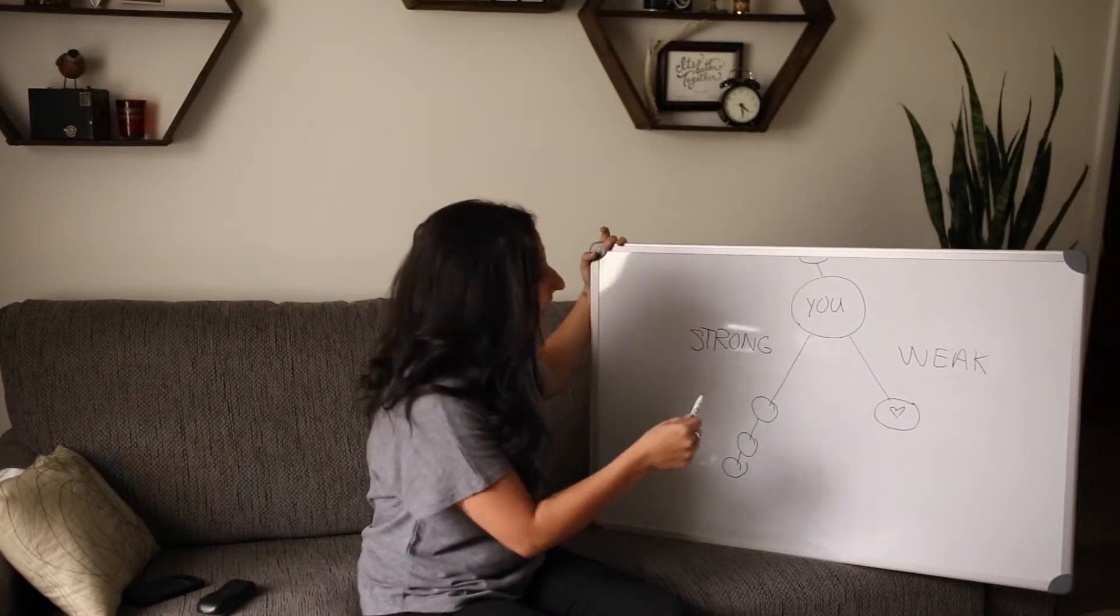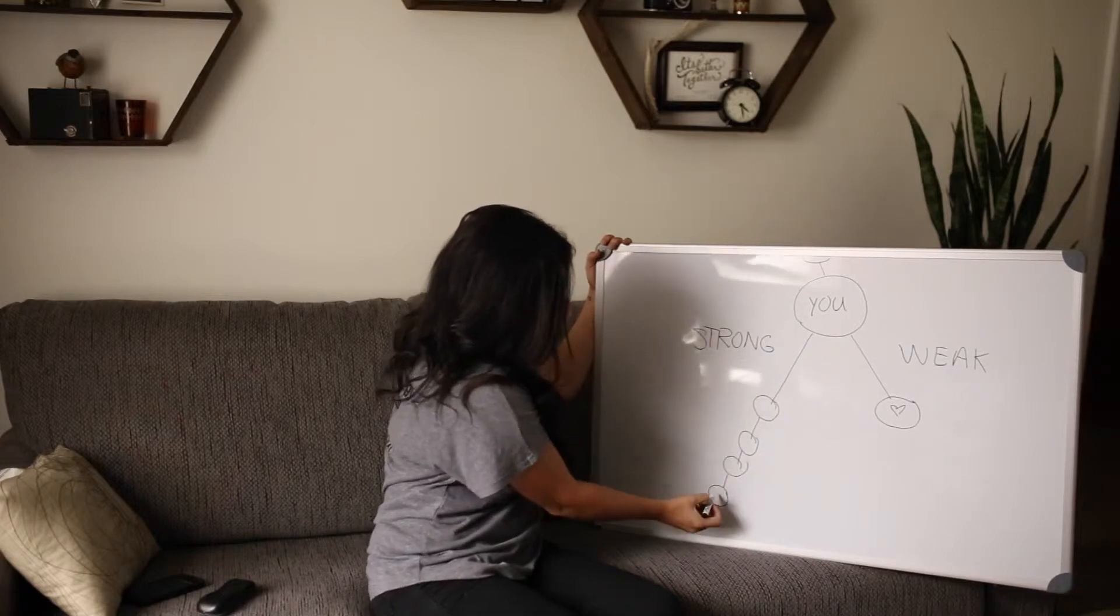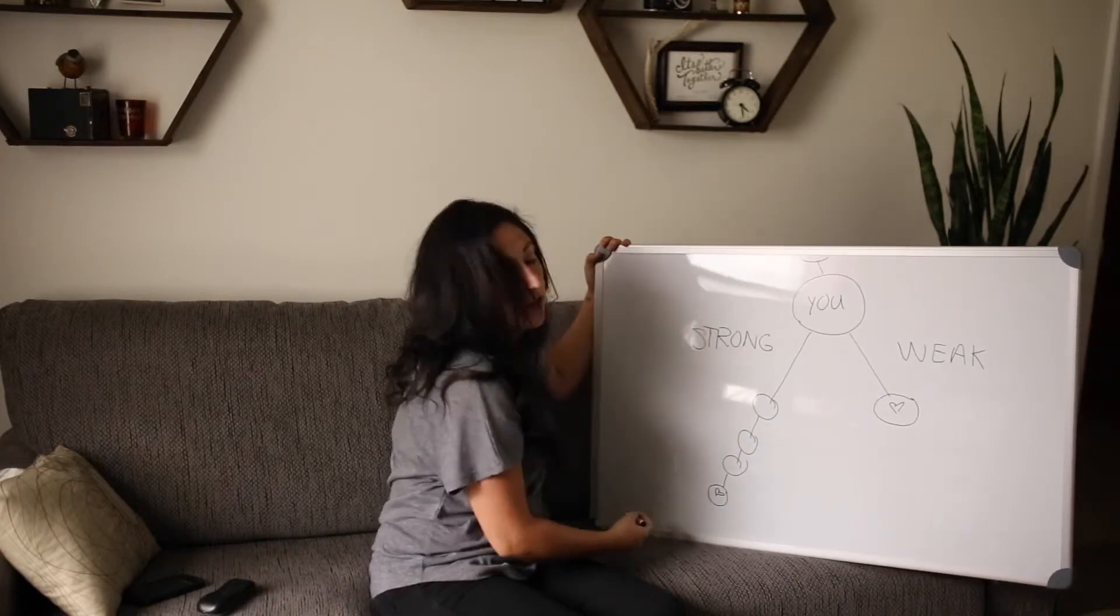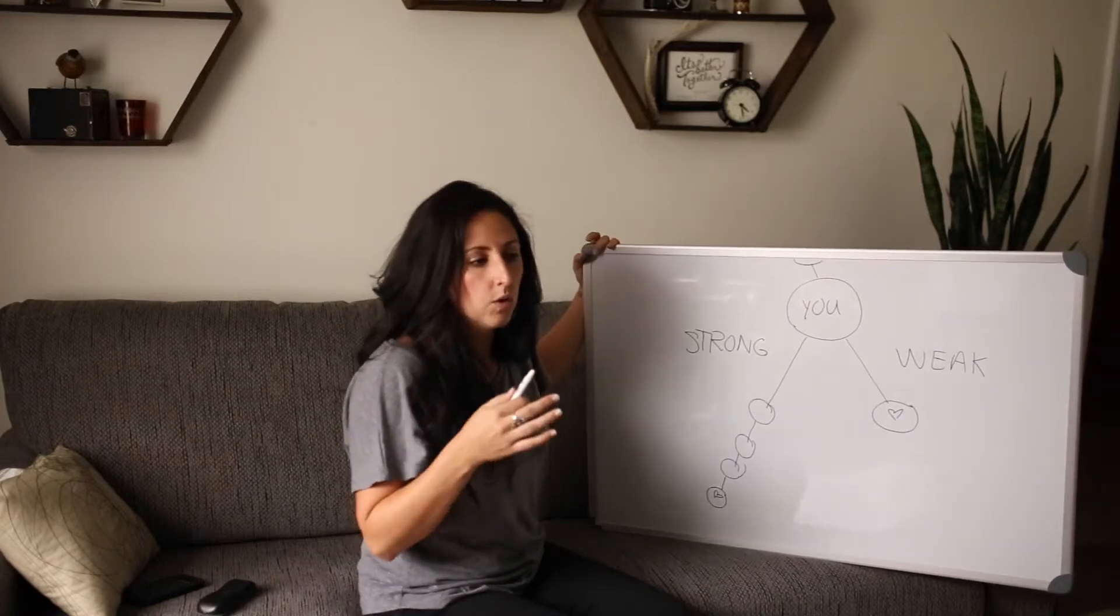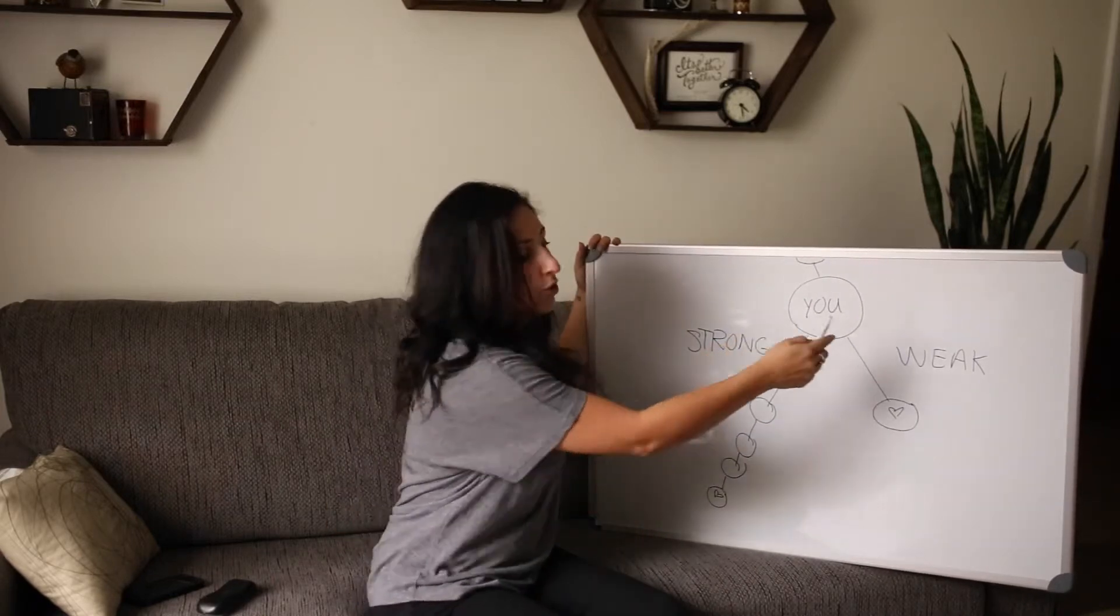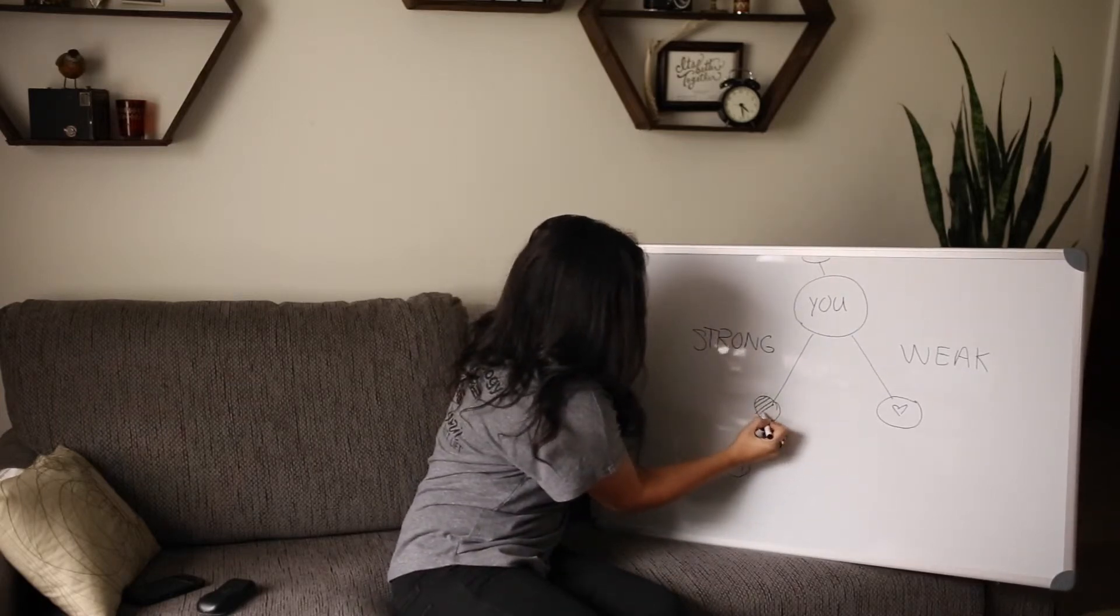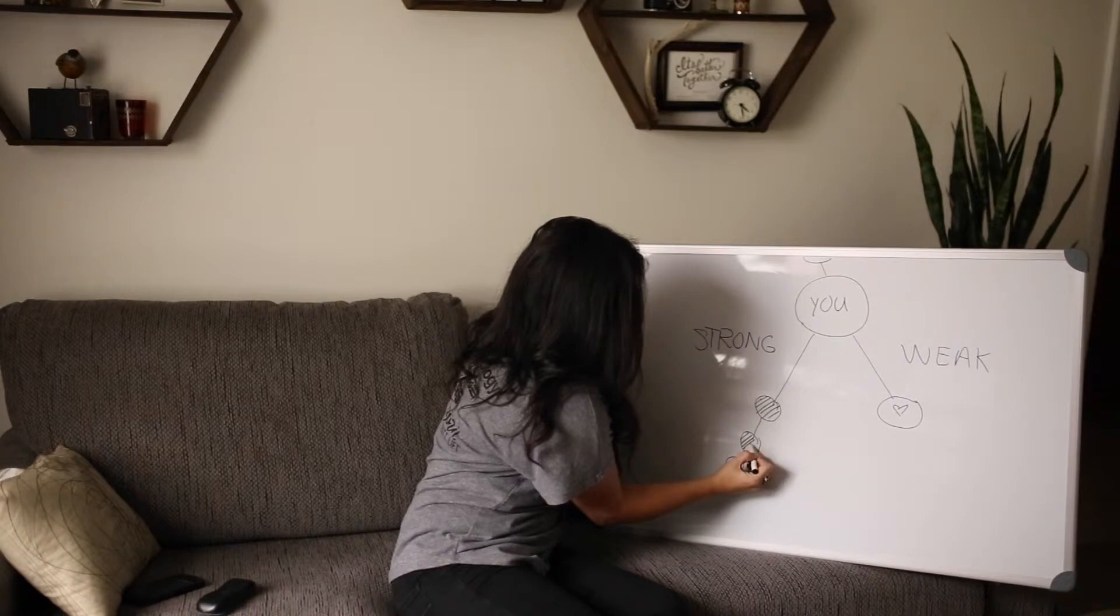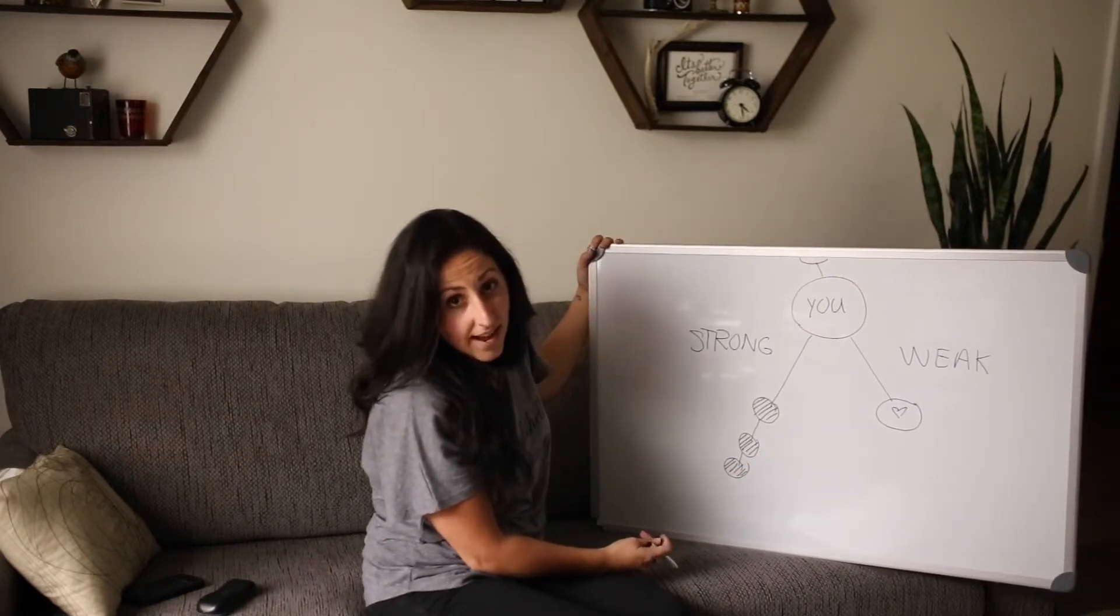So when you add somebody to your strong leg, they'll go down here to the bottom of this row, even though they're your coach. Now when you add someone, that counts towards your qualifications. So like if you were trying to go Emerald, let's say if you were trying to go Emerald, and these were people added by your upline. I'm going to make them look like this.